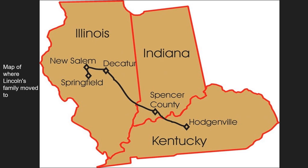In 1831, he moved to New Salem and became a shopkeeper and postmaster. That eventually failed, and he became a supporter of the Whig Party. He won the election to be a part of the Illinois state legislature in 1834. This is when he started to become a politician and to be noticed. He opposed slavery, and he wanted to expand the United States, focusing on cities more than agriculture.